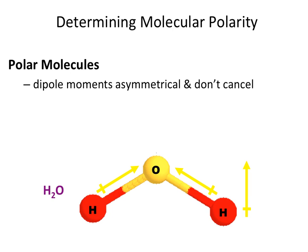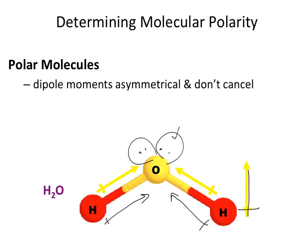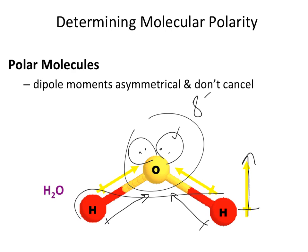In a polar molecule, there is no symmetry that allows dipoles to cancel out. H2O is a good example — it has two lone pairs on the central oxygen atom and two hydrogens bonded to it. Hydrogen is less electronegative, so oxygen is more electronegative, and the dipole moments within the individual bonds point toward the oxygen. Combined with the lone pairs, this creates an overall dipole moment, giving the molecule a partial negative near the oxygen and partial positives near the hydrogens — making it a polar molecule.